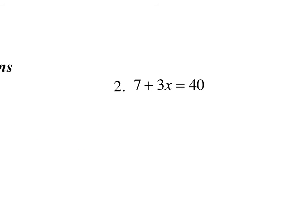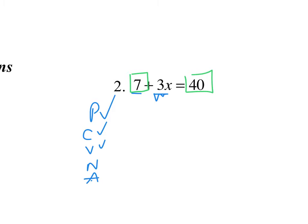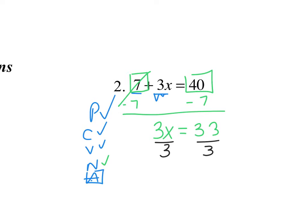Now let's go on to our next example. I'll write out PCVNA. Do I have parentheses? Nope. Can I combine my 7 and my 3x? Nope. Are all my variables on the left-hand side of my equals? Yes, my 3x is over here. Are my numbers on the right-hand side? No — I still have a 7 over here. So I subtract 7 from both sides. Cancel. So I get 3x equals 33. Now I divide by 3 on both sides, and I get x equals 11. That's your final answer.